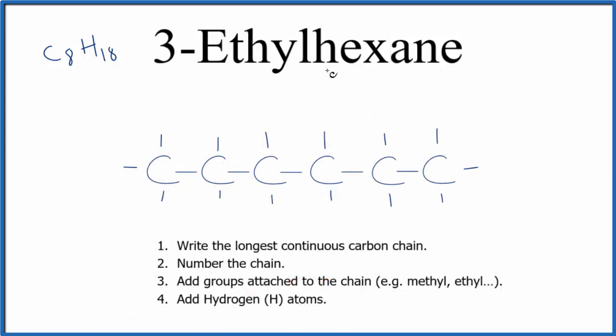So here we have hexane, and if we number them like this, we now see that on the third carbon, that's one right here, we have an ethyl group.